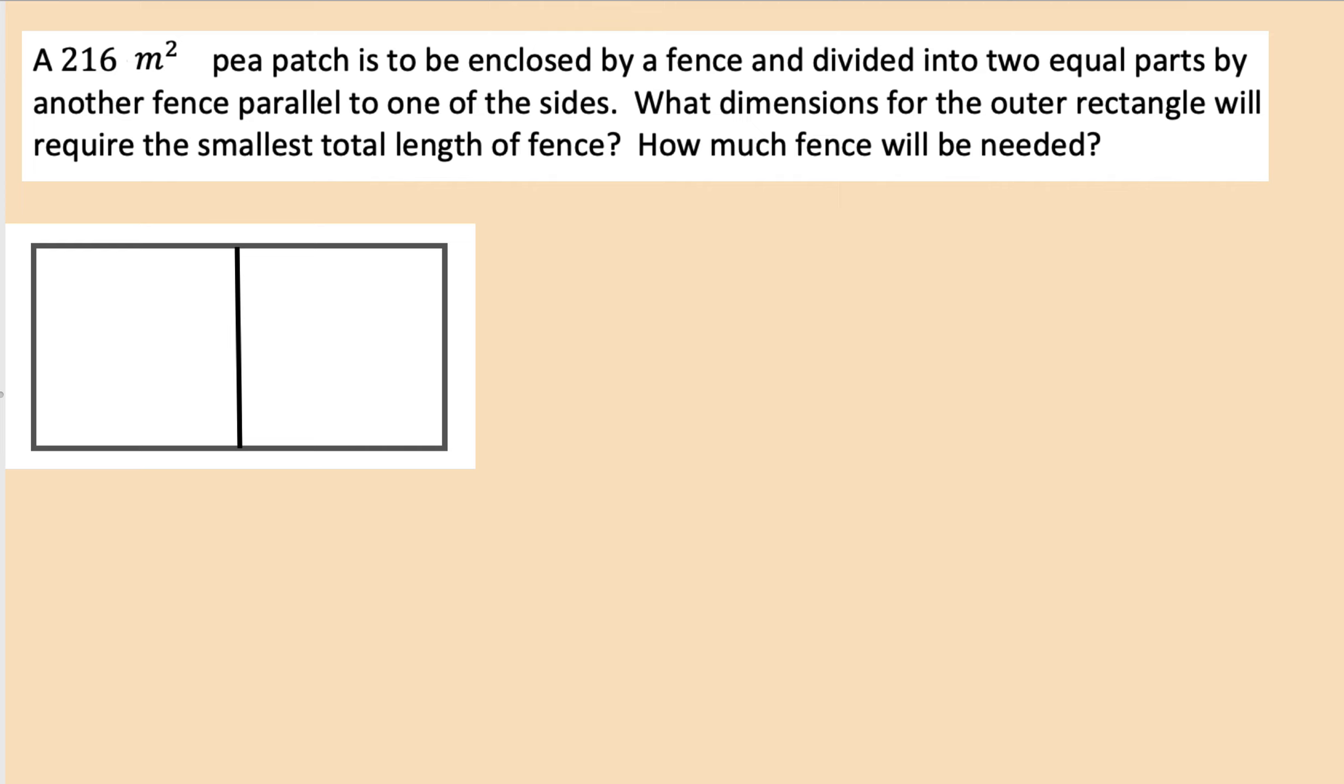Let's take a look at the next problem. We have a 216 square meter p-patch to be enclosed by a fence and divided into two equal parts by another fence right in between here. So we're going to call this part x and x because they're divided into equal quantities. And so these both will be x's here. These will be y's. We don't know what that dimension is. So we know that our area of this whole rectangle is 216, and 216 will be 2x times y, or xy = 108.